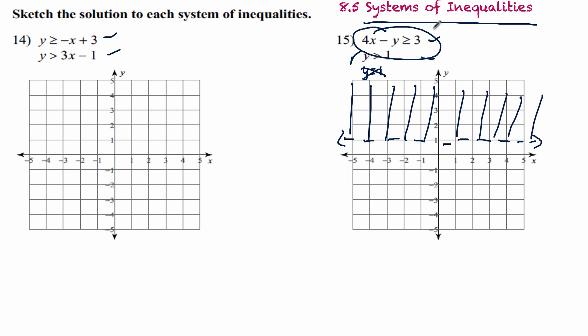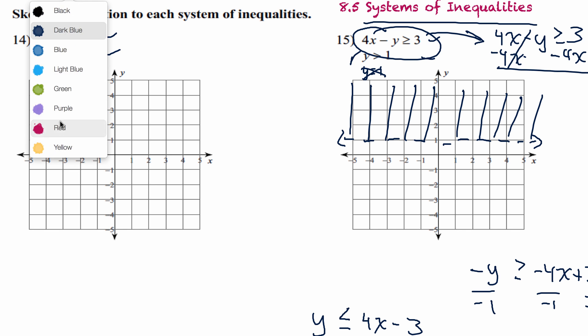The first equation here. We got 4x minus y is greater than or equal to 3. I'm going to subtract 4x from each side. These are going to cancel. Negative y is greater than or equal to negative 4x plus 3. Now I'm going to divide by negative 1. Divide everything. So what do you do when you divide by a negative? That sign's got to flip. So you're going to get y is less than or equal to 4x minus 3.